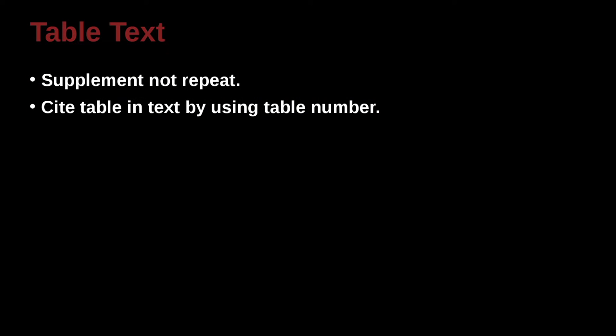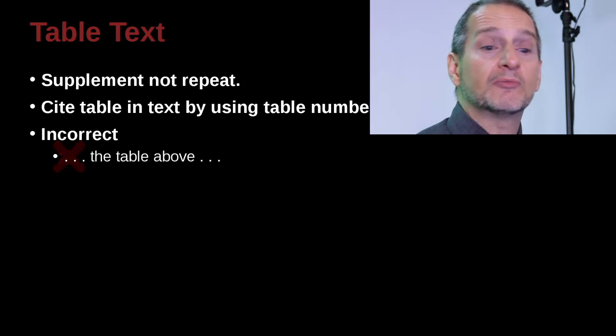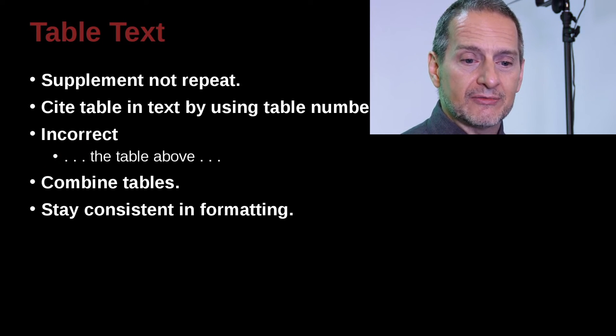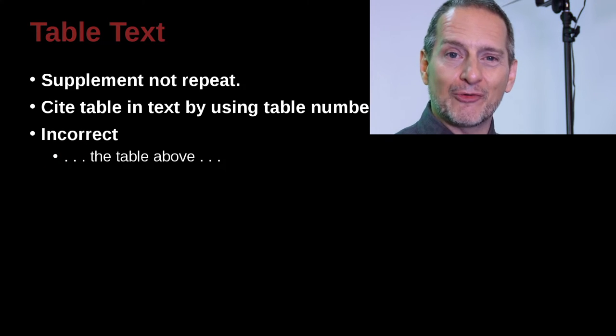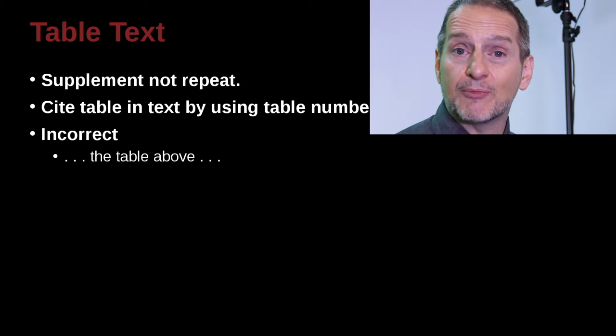When you cite a table, of course, you're going to say something like, see table 1, see table 2. So for example, this would be the wrong way. The table above. And then this would be the right way. Well actually, we don't have the right way here. The right way would be see table 2, see table 1.